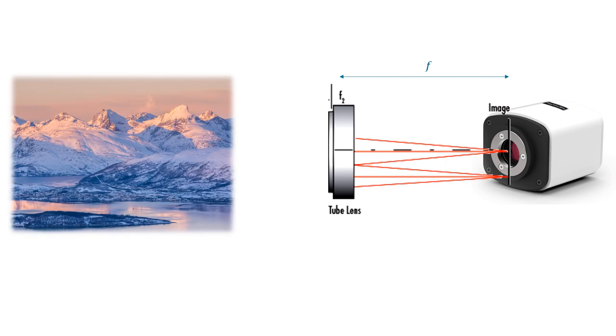When the mountain is in focus on your camera, that means the camera is in the focus of the tube lens.